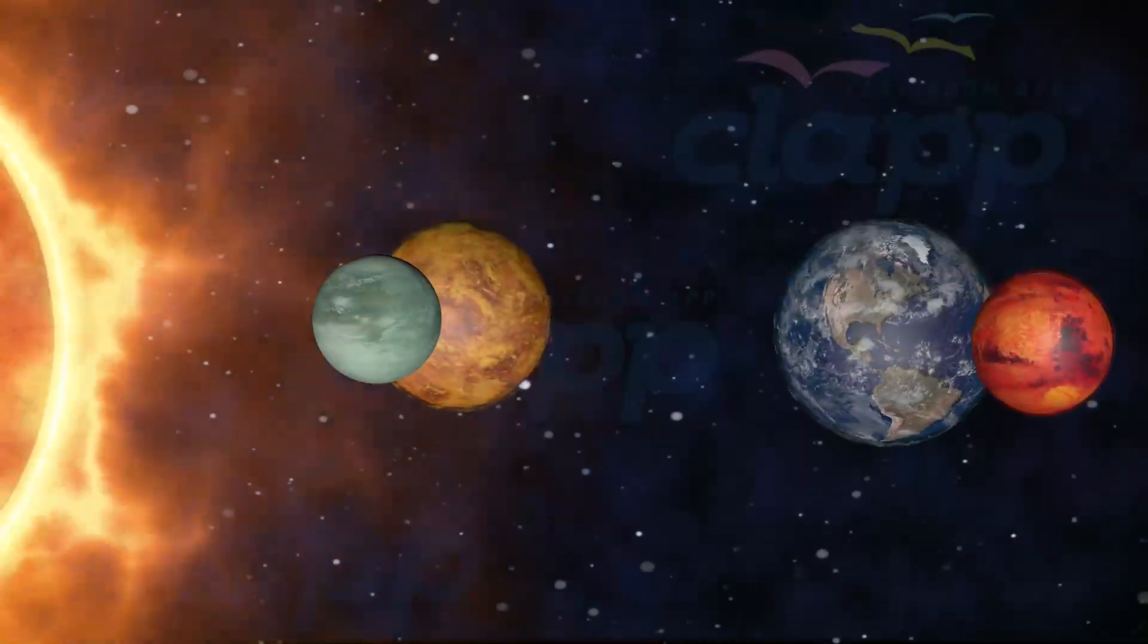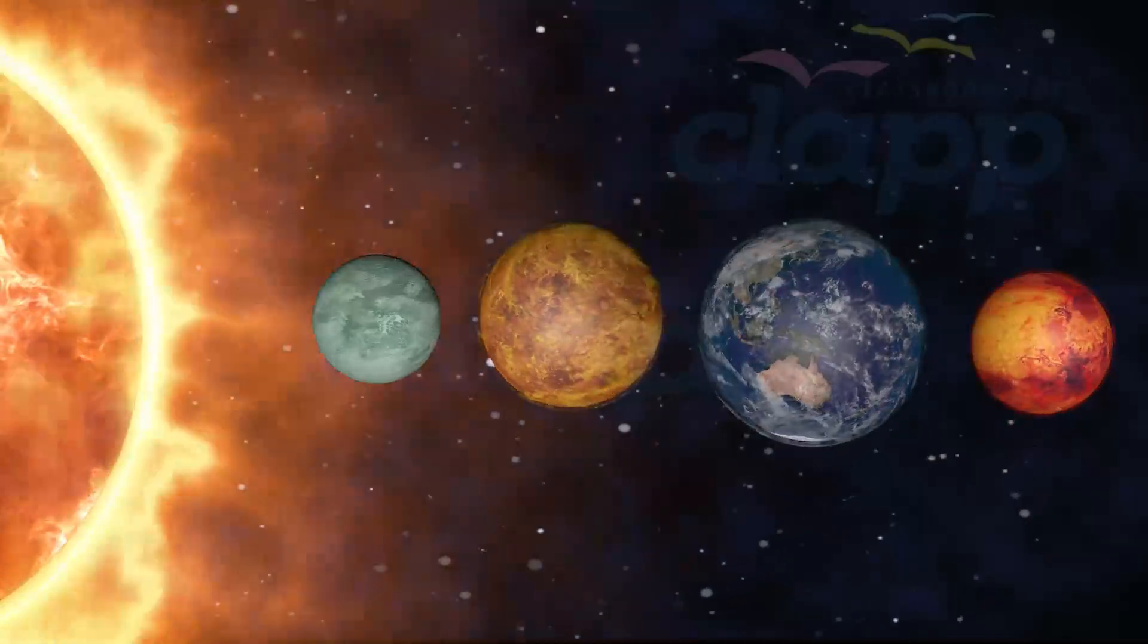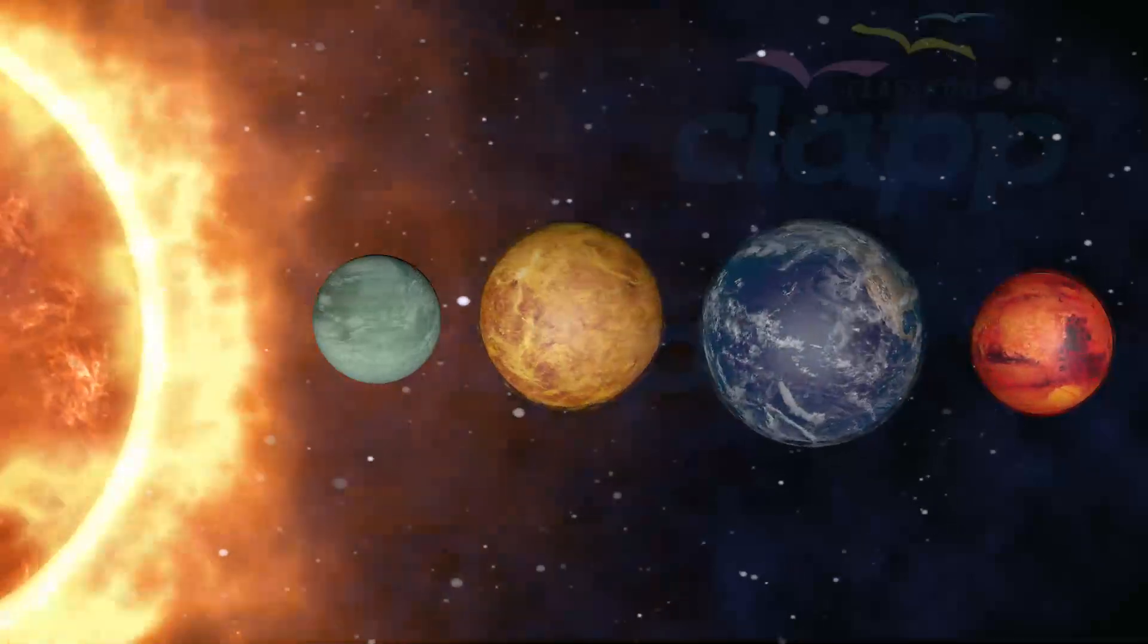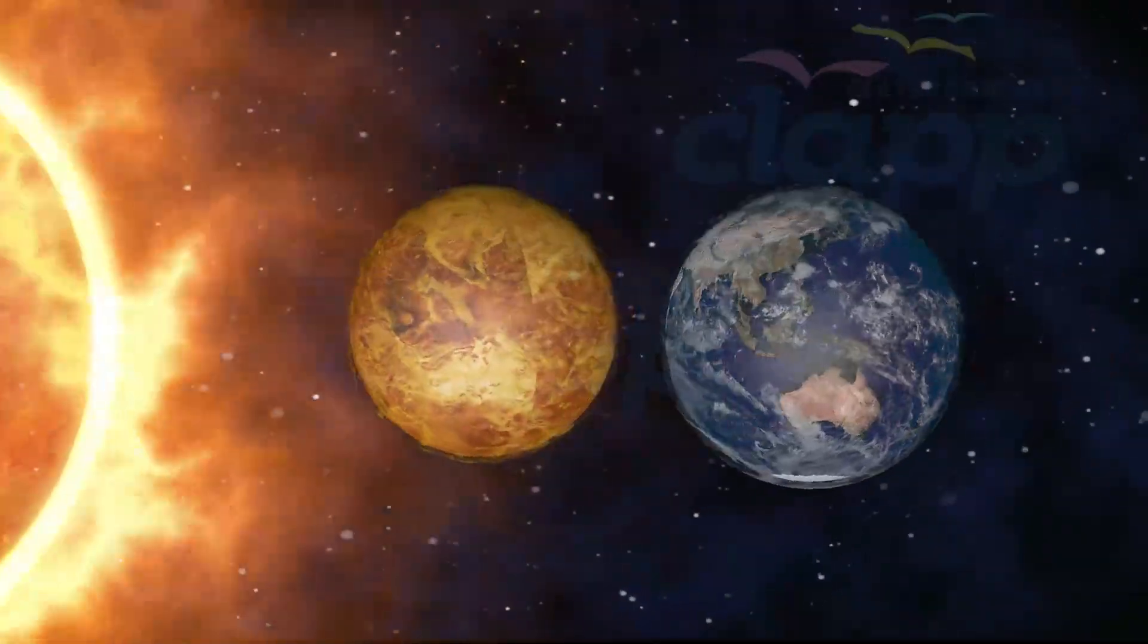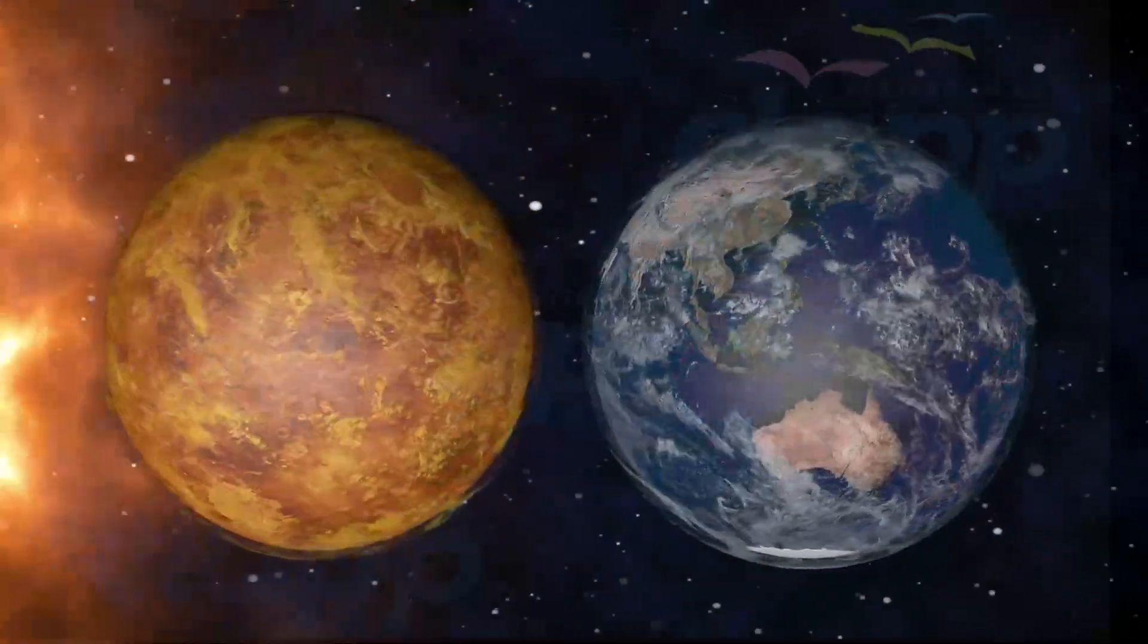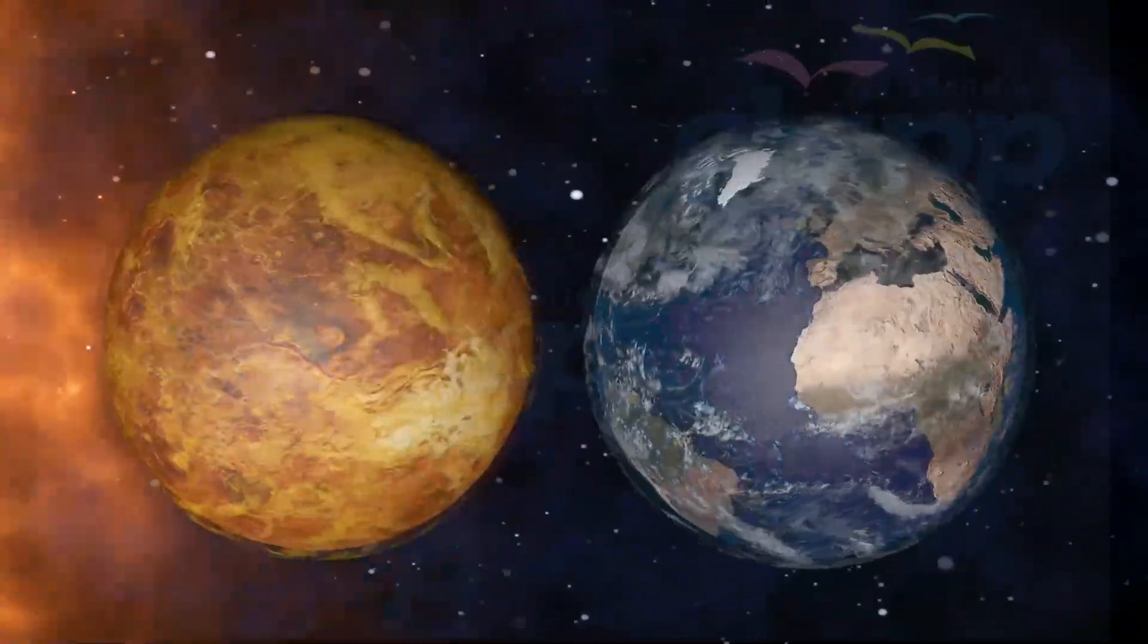Venus is one of the four terrestrial planets in the solar system, meaning that it has a rocky body like Earth. It is similar to Earth in size and mass, and is often described as Earth's sister planet.